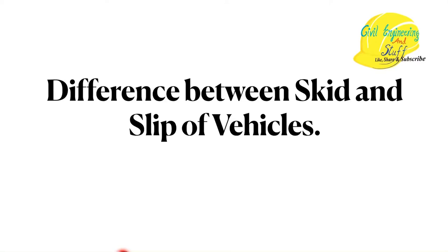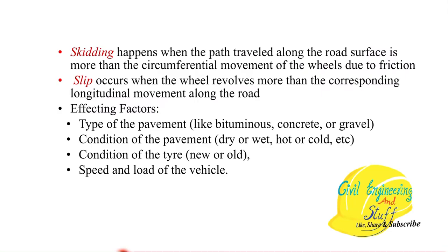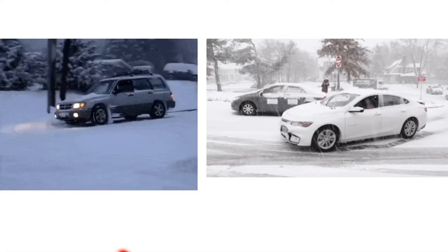Hello everyone, welcome to Civil Engineering and Stuff. In today's short video we are going to discuss the difference between the skid and slip of a vehicle. Skidding is when the path traveled along the road surface is more than the circumferential movement of the vehicle, while slip is when the wheel revolves more than the corresponding longitudinal movement along the road.